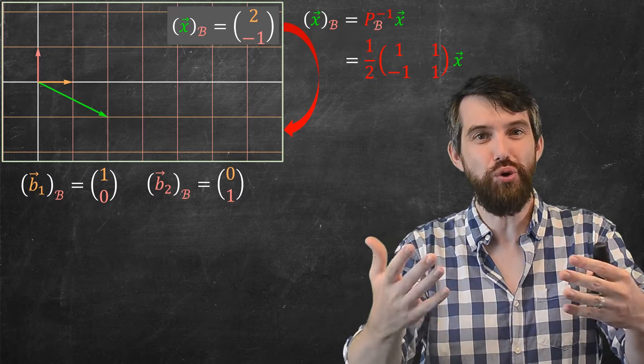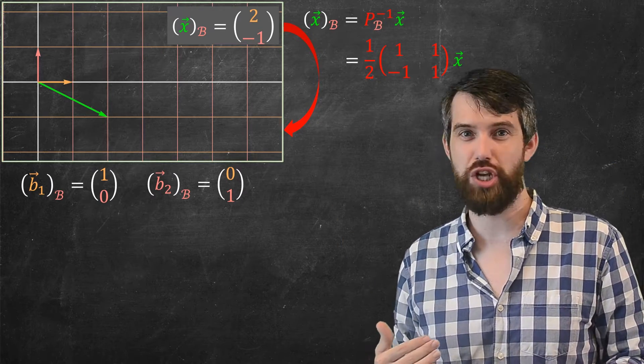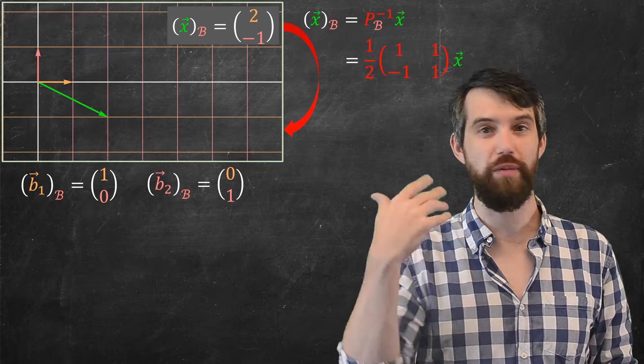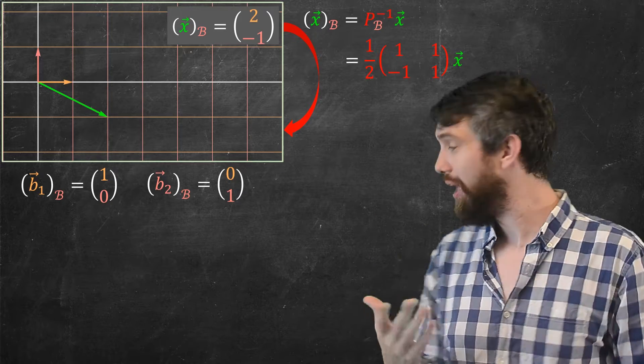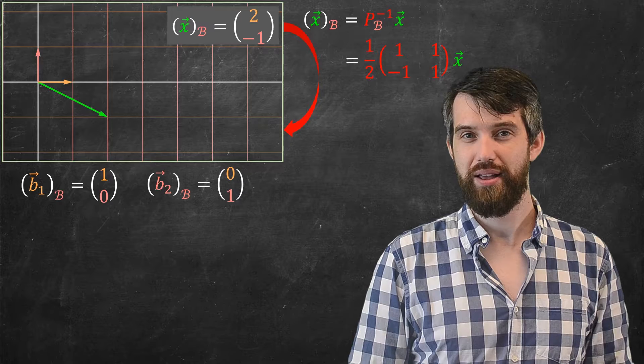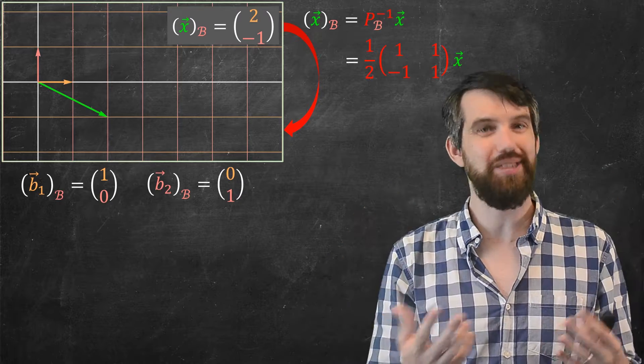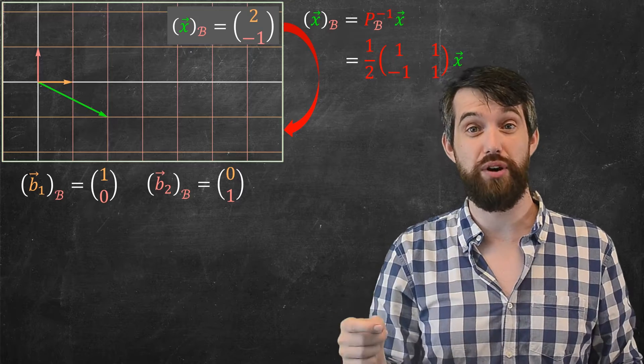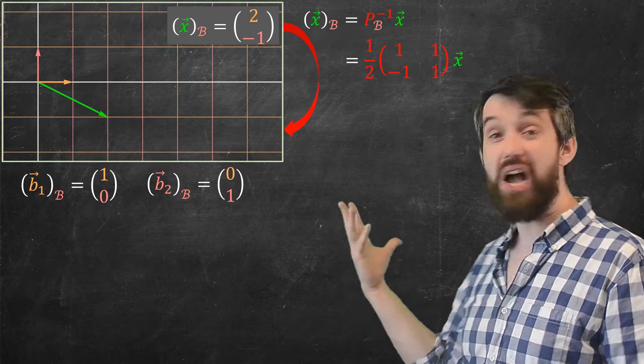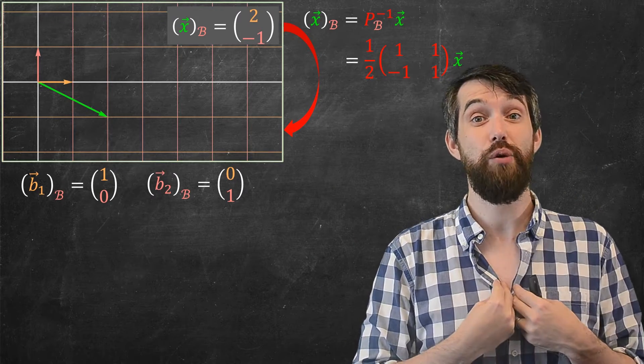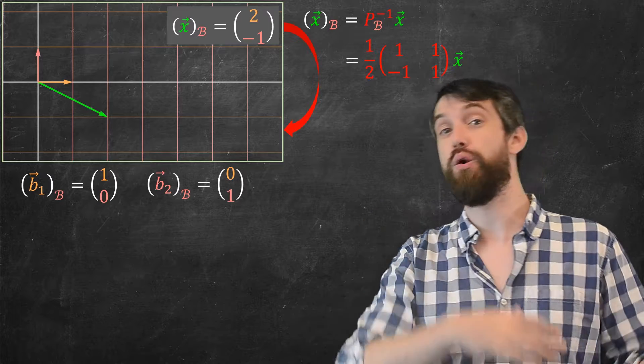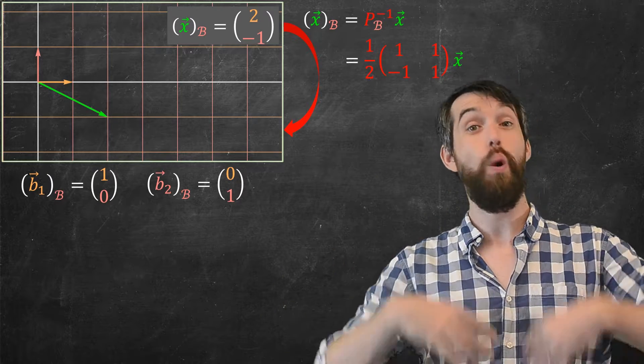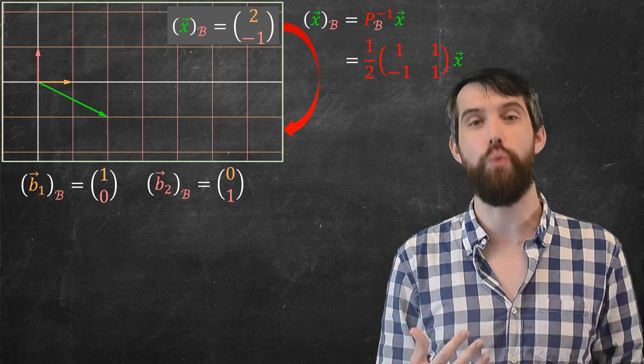And likewise, for b2 written in the b basis, this is just one copy of going along the b2 and not going along the b1 at all, it just looks like zero one. So for somebody in the b basis, somebody who's never seen the standard basis, they would, if they were trying to draw their coordinate system, probably come up with the same kind of standard Cartesian system that we have. And they would talk about taking one step to the right meant going along their b1 once, and one step up meant going along their b2 once.